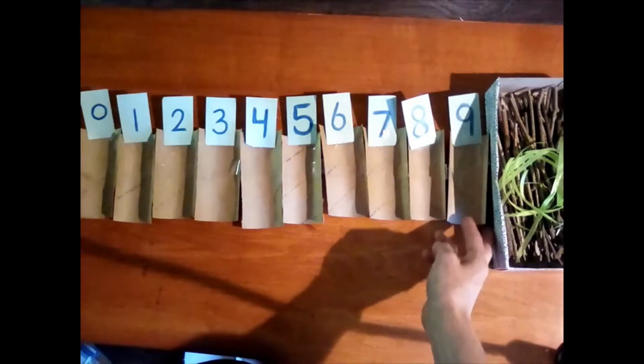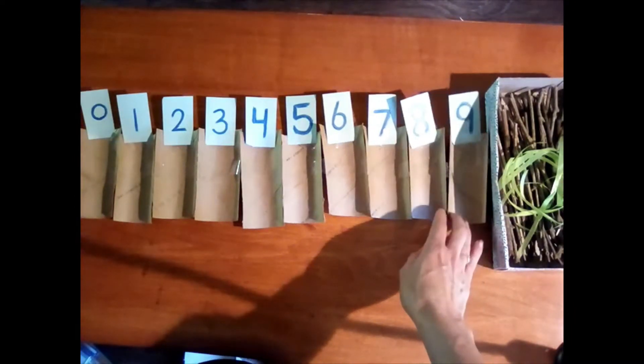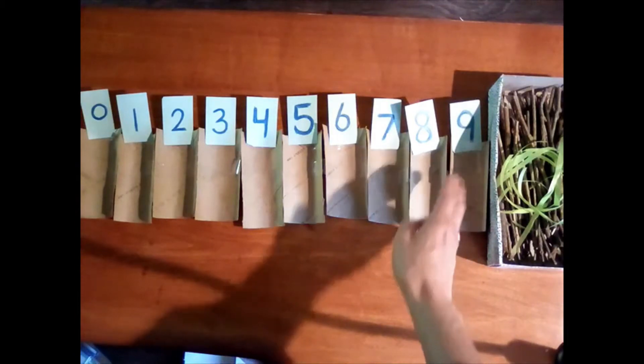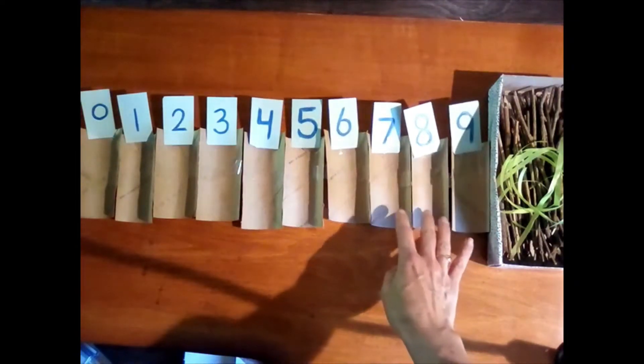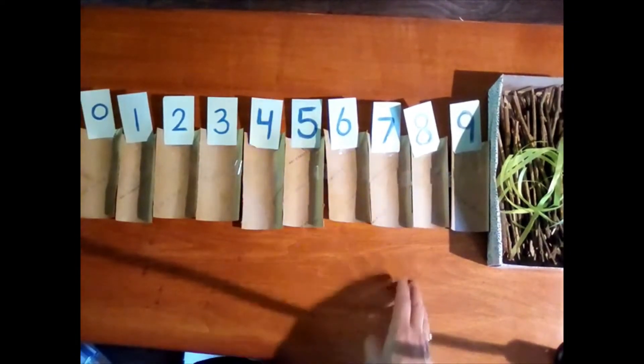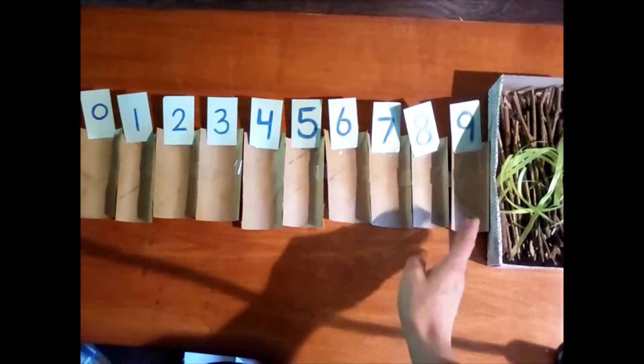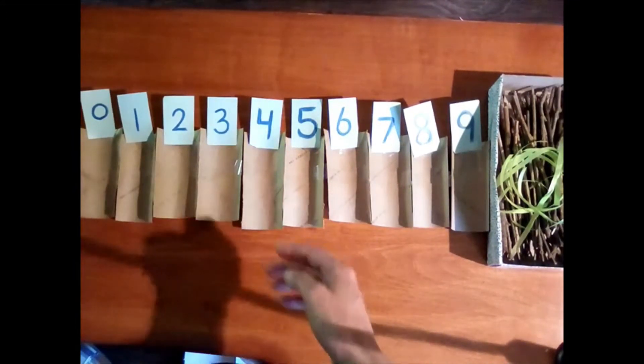Here is what I used all the toilet paper rolls for. Actually some of them are paper towel ones, so I just cut them in half. If they were toilet paper rolls I just cut them in half once. If they were paper towel rolls I actually got four, so I used two paper towel rolls and one toilet paper roll.